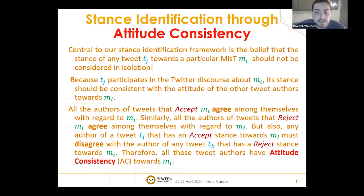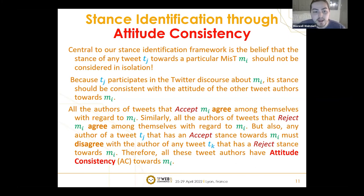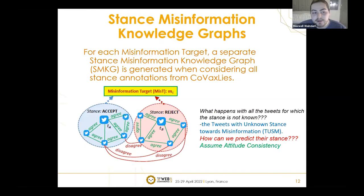Tweets agree if they both have the same stance towards that misinformation target, but they disagree if they have different stances. So if one accepts and the other rejects, they disagree. This concept of attitude consistency allows us to look at these tweets as a large graph of semantic agreement and disagreement towards the same misinformation target.